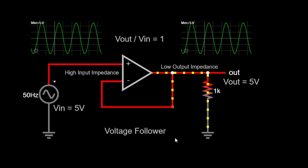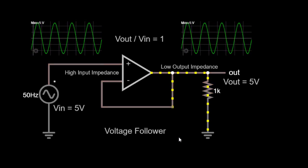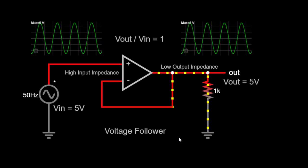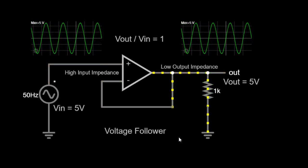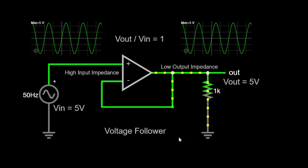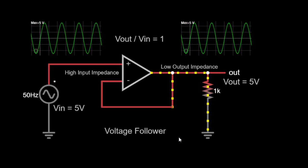This characteristic makes it useful in situations where the load impedance needs to be matched to the source impedance, preventing distortion or loss of signal. Additionally, it is commonly used in cases where the input impedance of the following stage needs to be preserved.